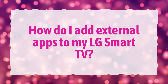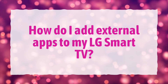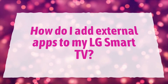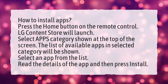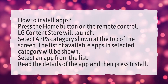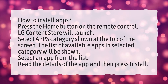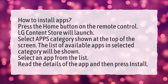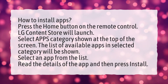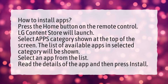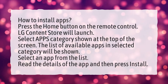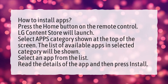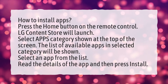How do I add external apps to my LG Smart TV? To install apps, press the Home button on the remote control — LG Content Store will launch. Select the Apps category shown at the top of the screen; the list of available apps in the selected category will be shown. Select an app from the list, read the details, and then press Install.